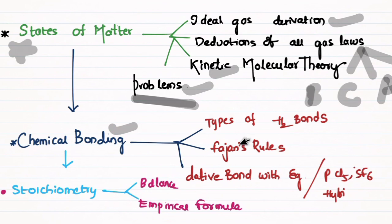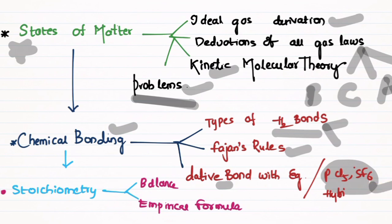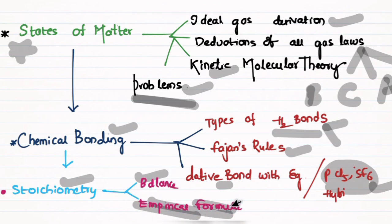Chemical bonding has 3 questions. Most important: types of hydrogen bonds — intramolecular and intermolecular — with examples, worth 4 marks. Then coordinate and covalent bonds with examples. Also sp3d and sp3d2 hybridization with PCl5 and SF6 examples are important questions to prepare.